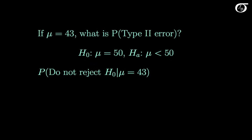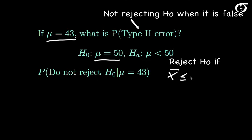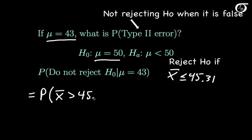If the true value of the population mean is 43, what is the probability we commit a type 2 error? A type 2 error is not rejecting the null hypothesis when it is false. Our null hypothesis that mu is 50 is false because the true mean is 43. The probability of a type 2 error is the probability that we do not reject the null hypothesis when mu is actually 43. Since we reject when x-bar is less than or equal to 45.31, the type 2 error probability is the probability that x-bar is greater than 45.31 given mu is actually 43.